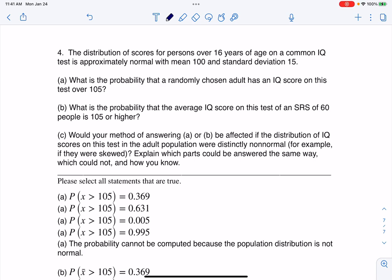Hey everyone, Ms. Abreu here. Let's finish out this part of the sample final. So here we have number or multiple answer number four. The distribution of scores for persons over 16 years of age on a common IQ test is approximately normal with a mean of 100 and a standard deviation of 15.